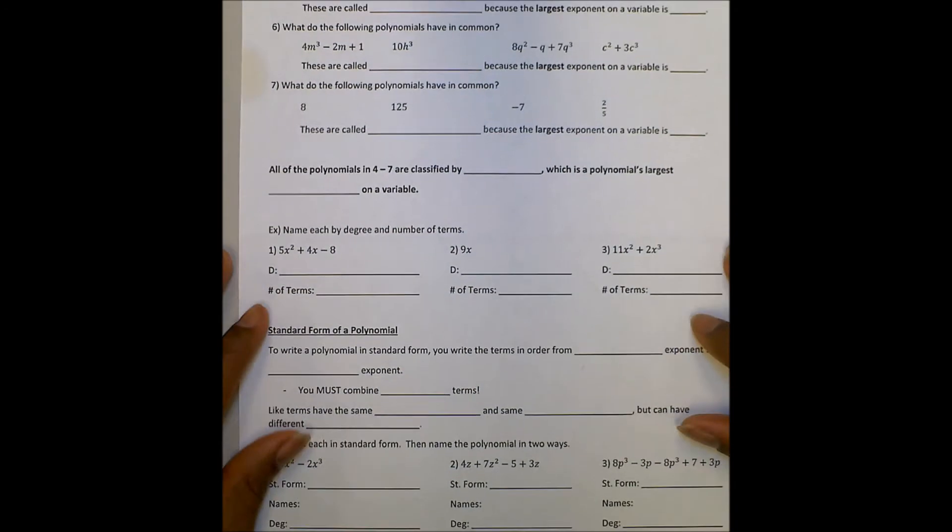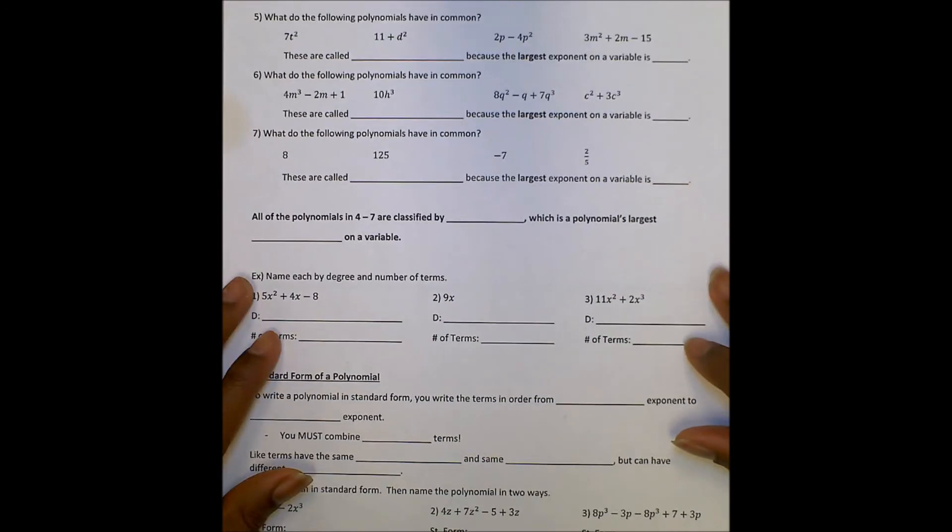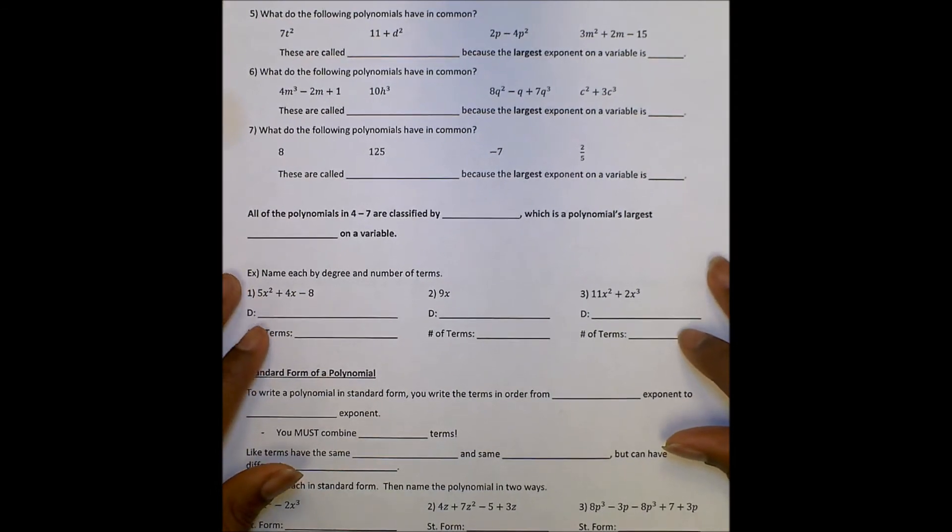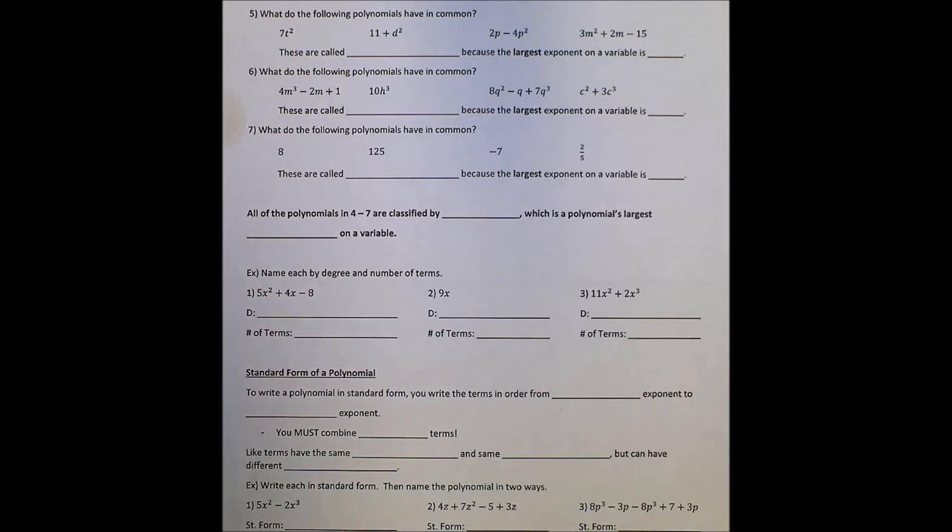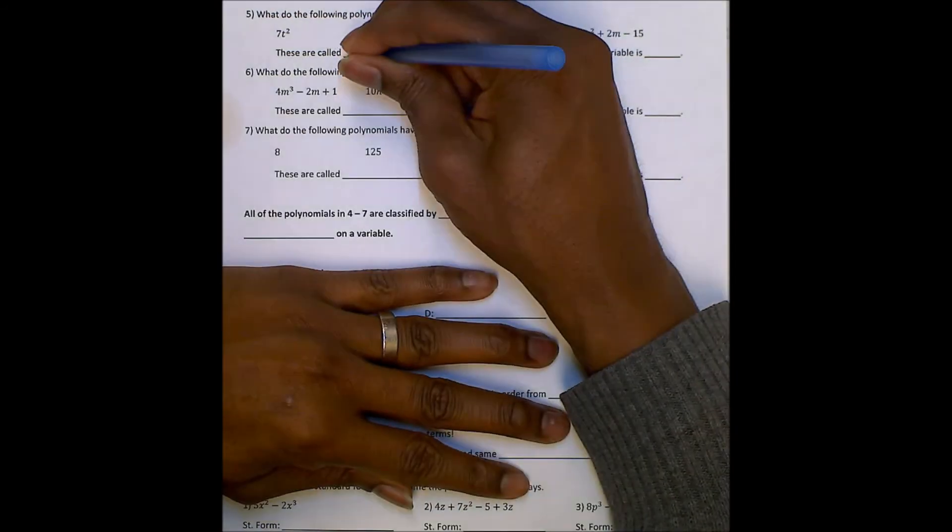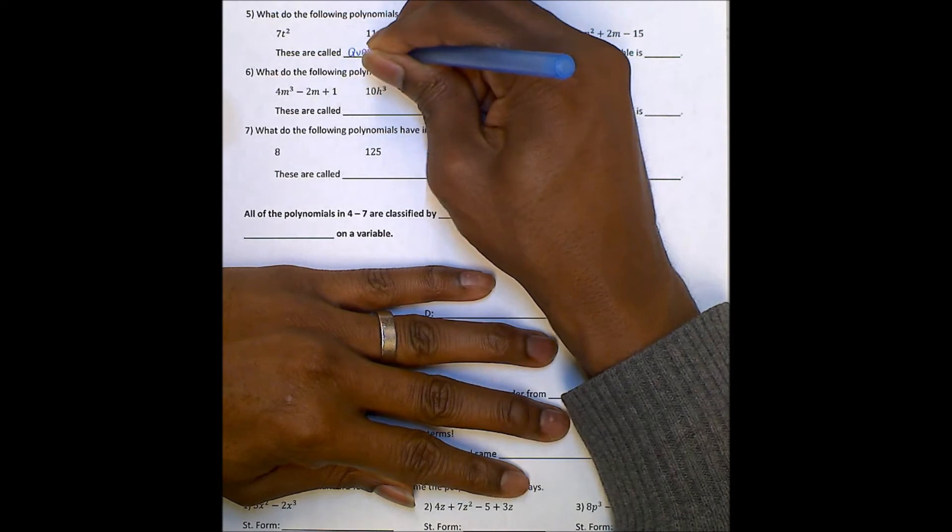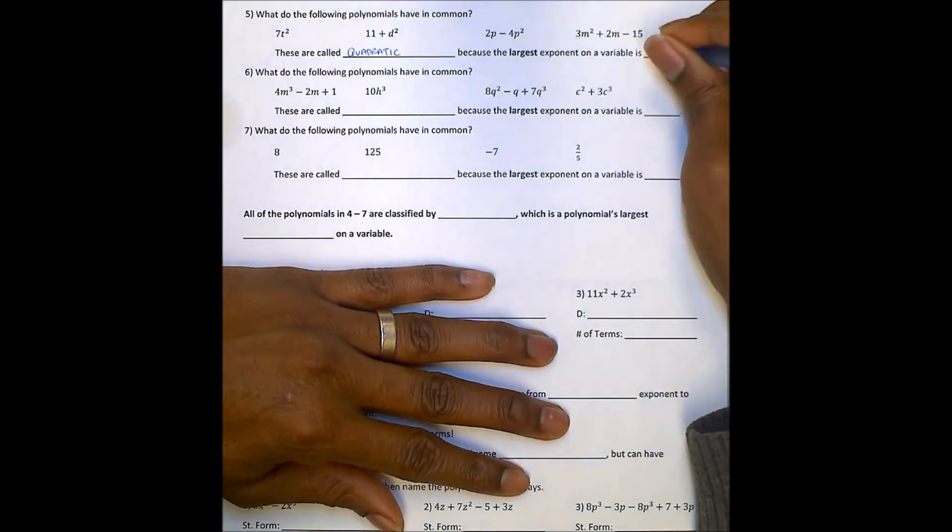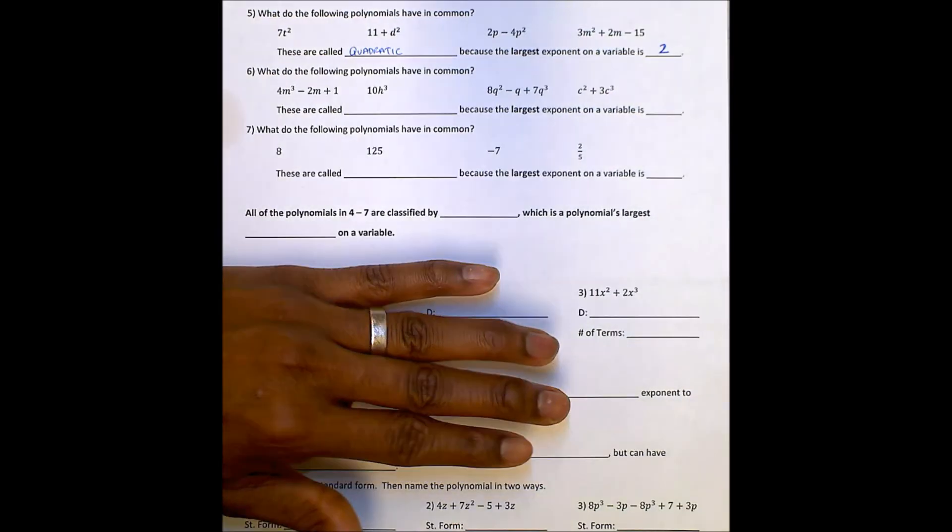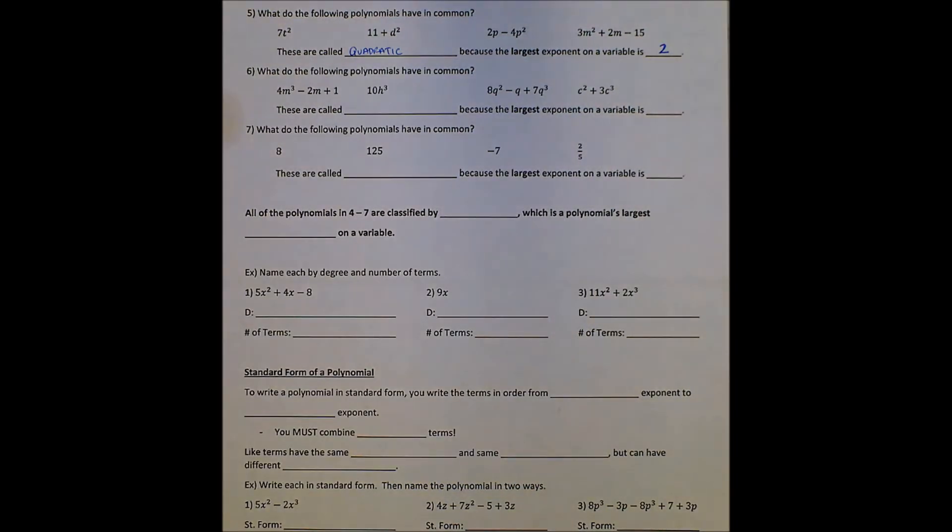Looking at these polynomials, we have 8x minus 5, 6z, 3 minus 9b, and 2 thirds k. Notice that some of these have one term, some have two terms. But these are called linear because the largest exponent on a monomial is 1. When we're looking at naming or classifying polynomials by degree, we're actually going to be looking at each individual monomial and seeing what the highest exponent is.